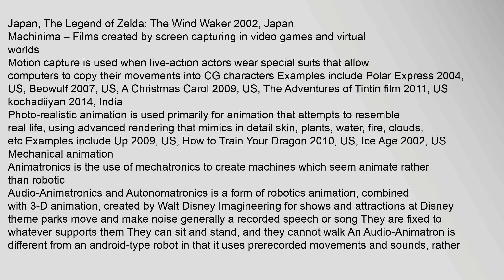Photo-realistic animation is used primarily for animation that attempts to resemble real life, using advanced rendering that mimics in detail skin, plants, water, fire, clouds, etc. Examples include Up (2009), How to Train Your Dragon (2010), and Ice Age (2002). Animatronics is the use of mechatronics to create machines which seem animate rather than robotic — audio-animatronics and autonomatronics — a form of robotics animation combined with 3D animation created by Walt Disney Imagineering for shows and attractions at Disney theme parks.